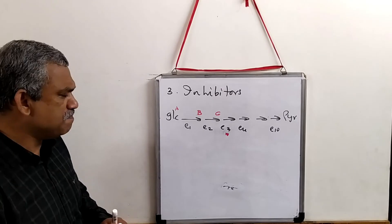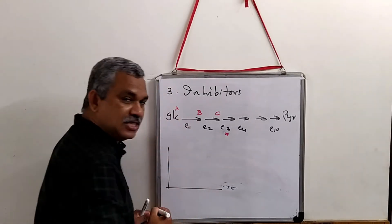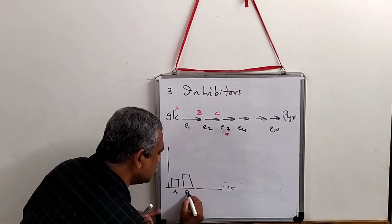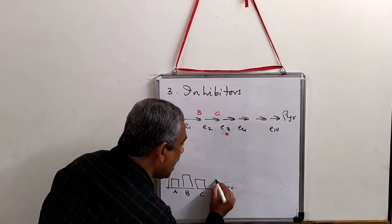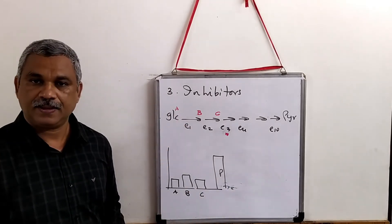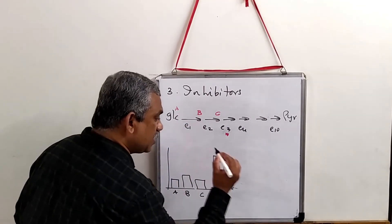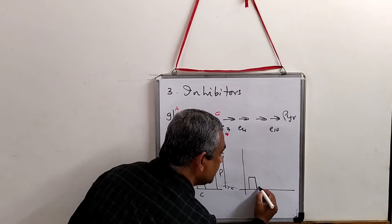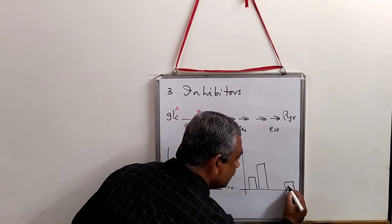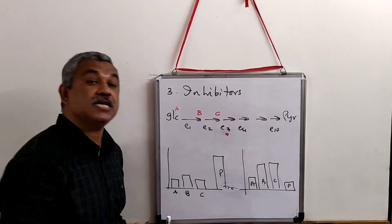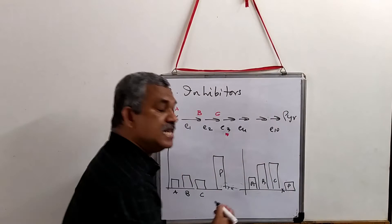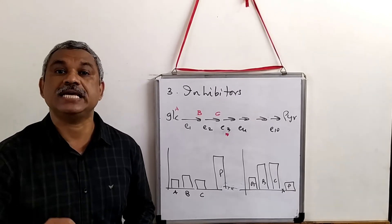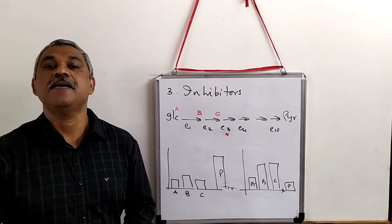If we draw a simple histogram for an ordinary pathway, intermediate A has one concentration, intermediate B has a different concentration, intermediate C, and finally the product. When you use an inhibitor, the graph will change. They are getting accumulated. The product is very low while A, B, and C are getting accumulated because you have used an inhibitor here. This is the logic of using inhibitors in order to understand metabolic pathways.